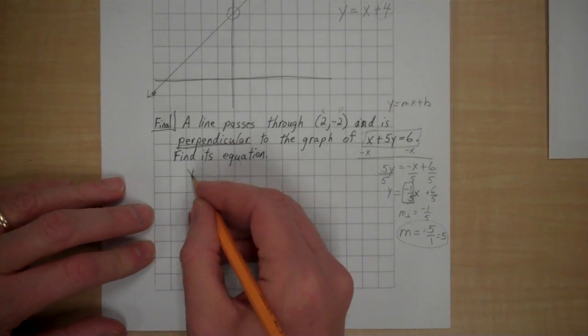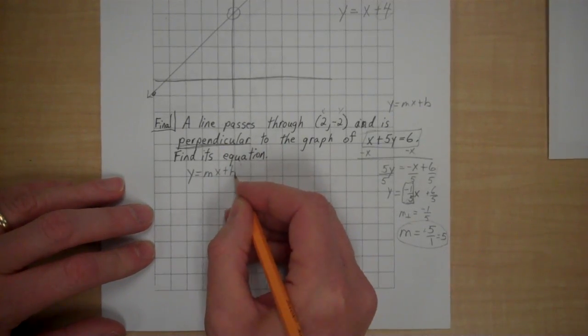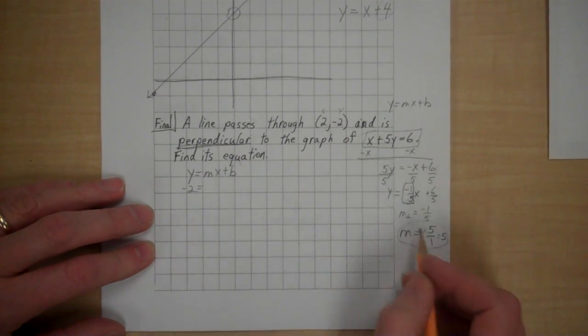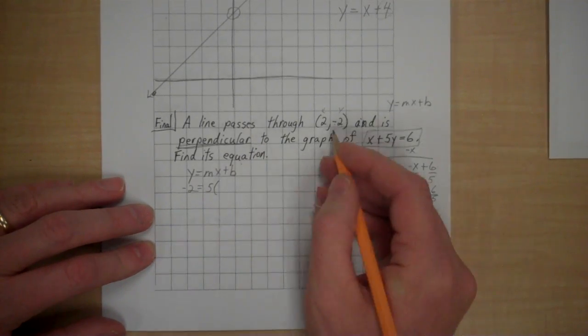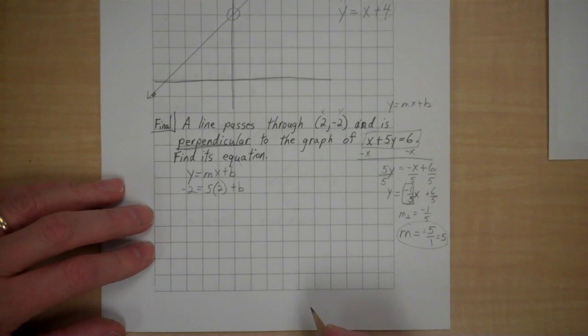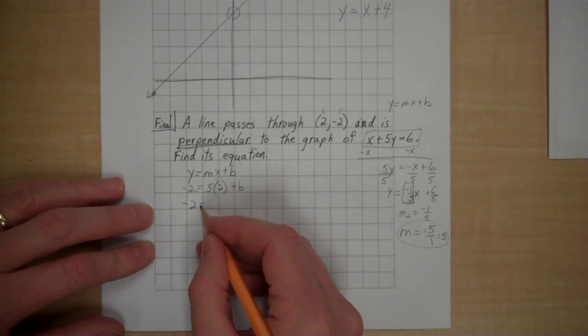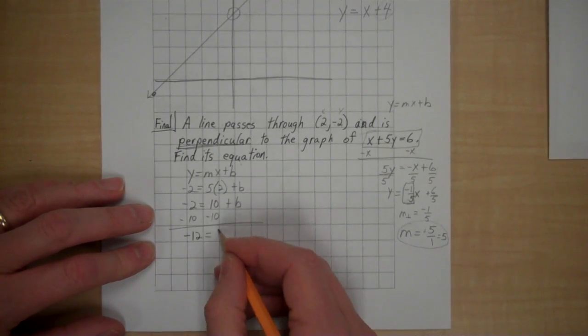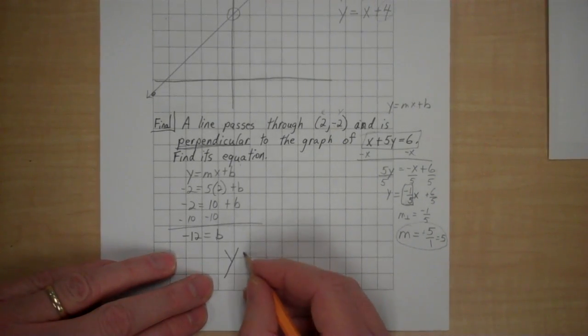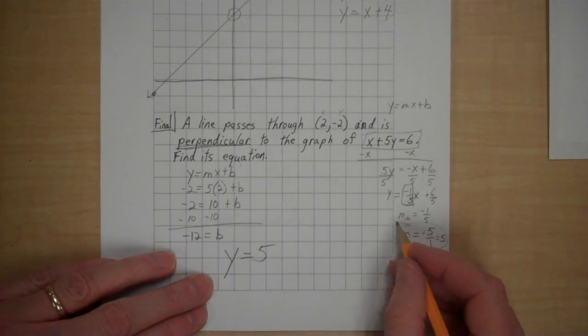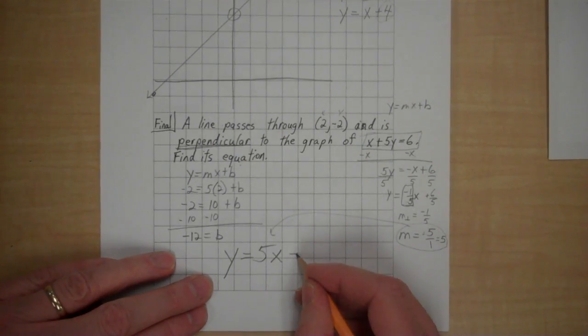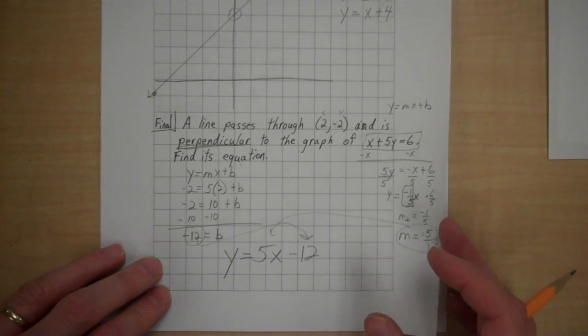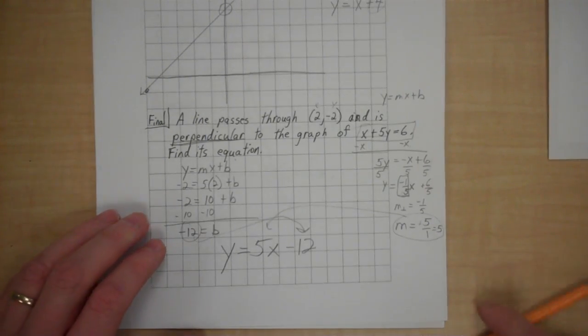We are in business now. y equals mx plus b. y is negative 2. m is 5. x is 2. And I can solve for b. And I have negative 2 equals 10 plus b. I can subtract 10 from both sides. I got negative 12 equal to b. And my equation is y equals 5 from the slope, x minus 12 from the y-intercept. And that is all I have for you.